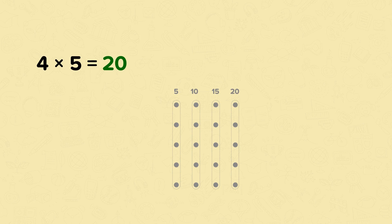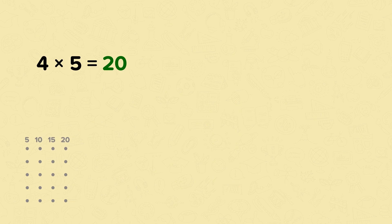Now let's look at how we could have solved this using a number line. All we need to do is make 4 jumps of 5. Remember, when using a number line to help with multiplication, we must always start at 0. So now, let's make those 4 jumps of 5.